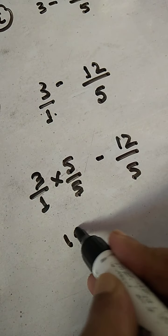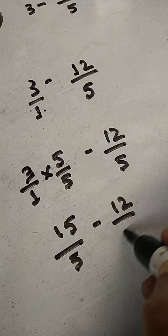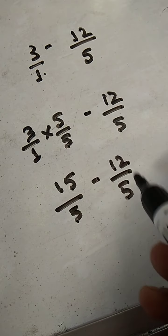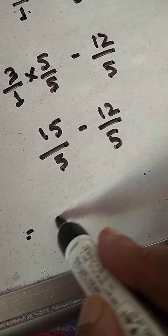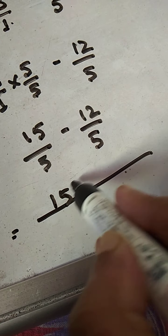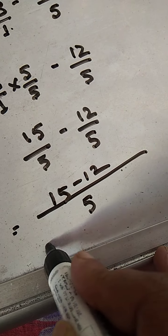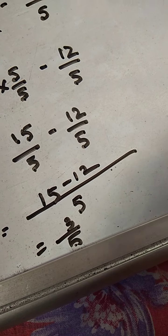Minus 12 by 5. So, 5 times 3 is what? 15. 5 times 1 is what? 5 minus 12 by 5. Now the denominators are same. This is a very easy way of doing it. Now, you know what exactly you have to do. You have to make a common denominator. So, 15 minus 12. What would be the answer? Answer would be 3 upon 5.